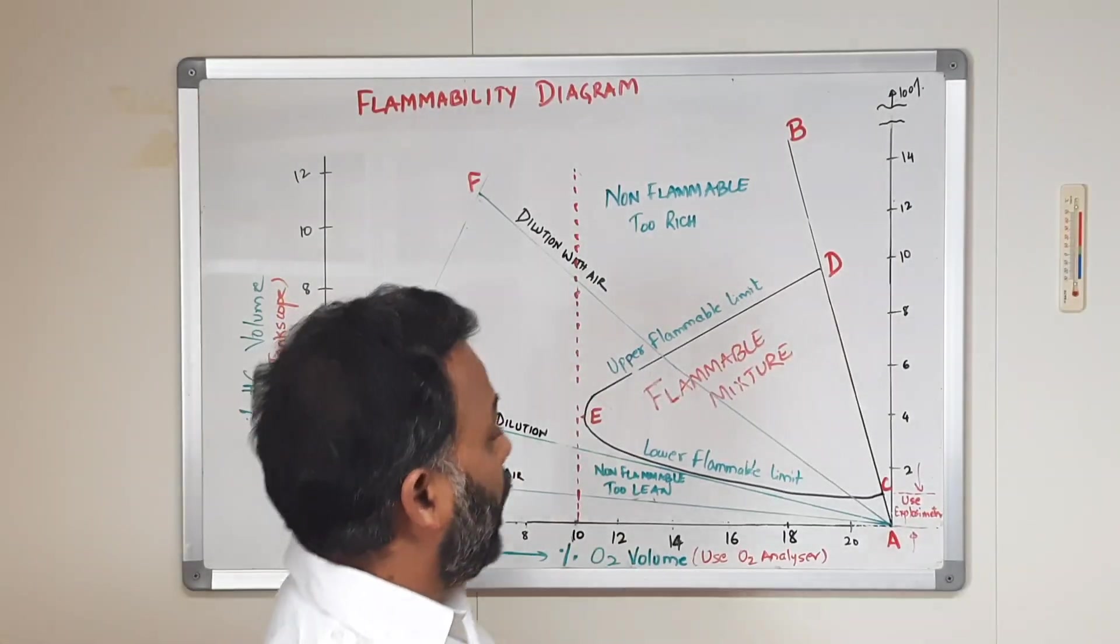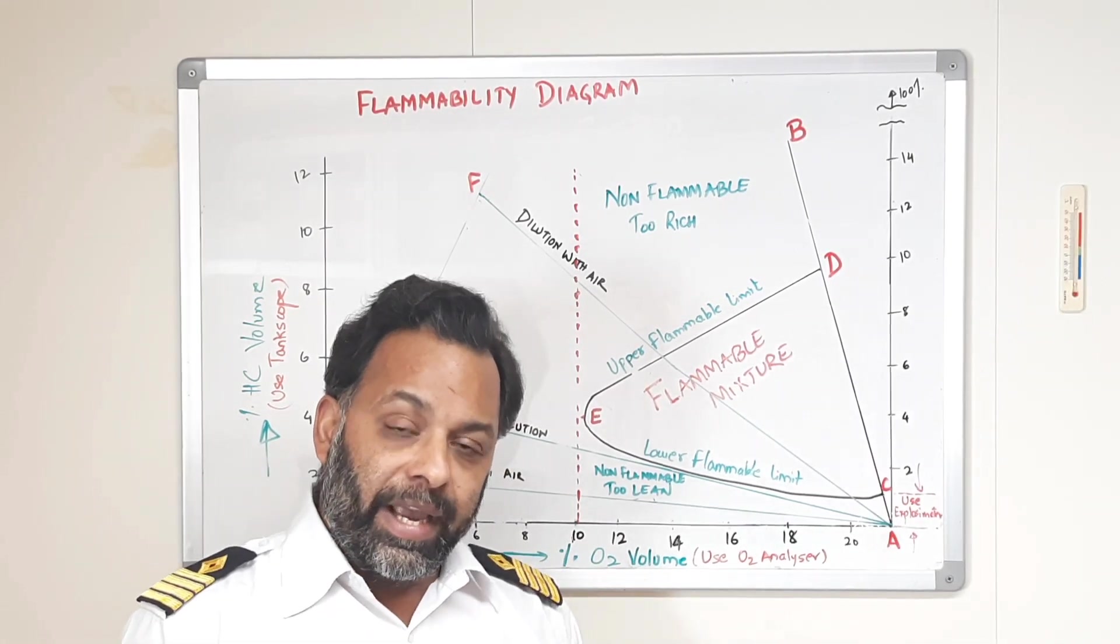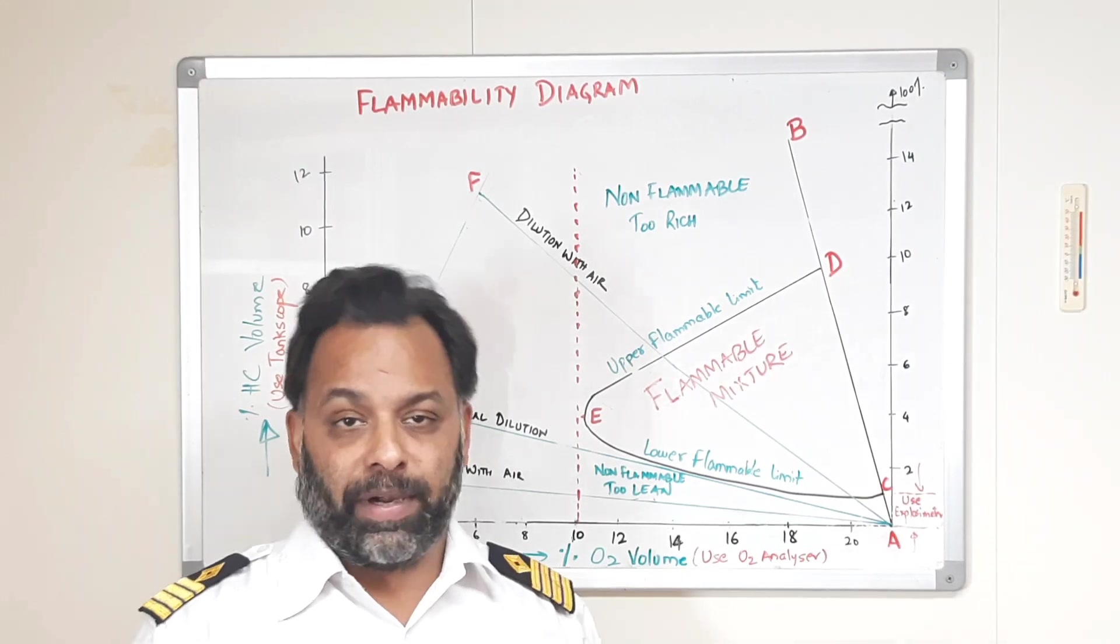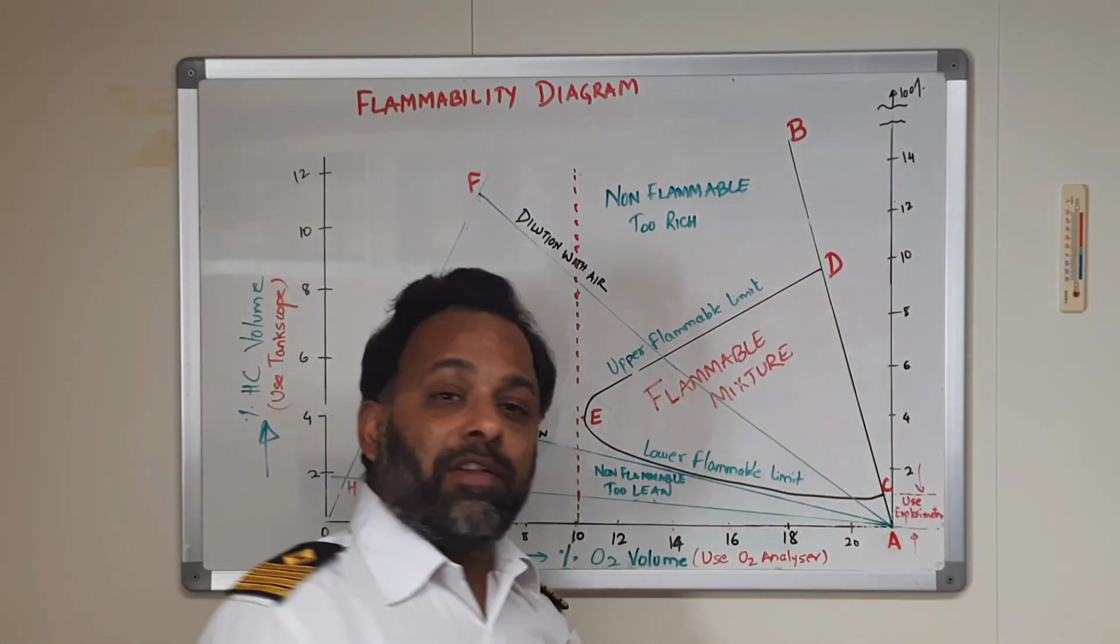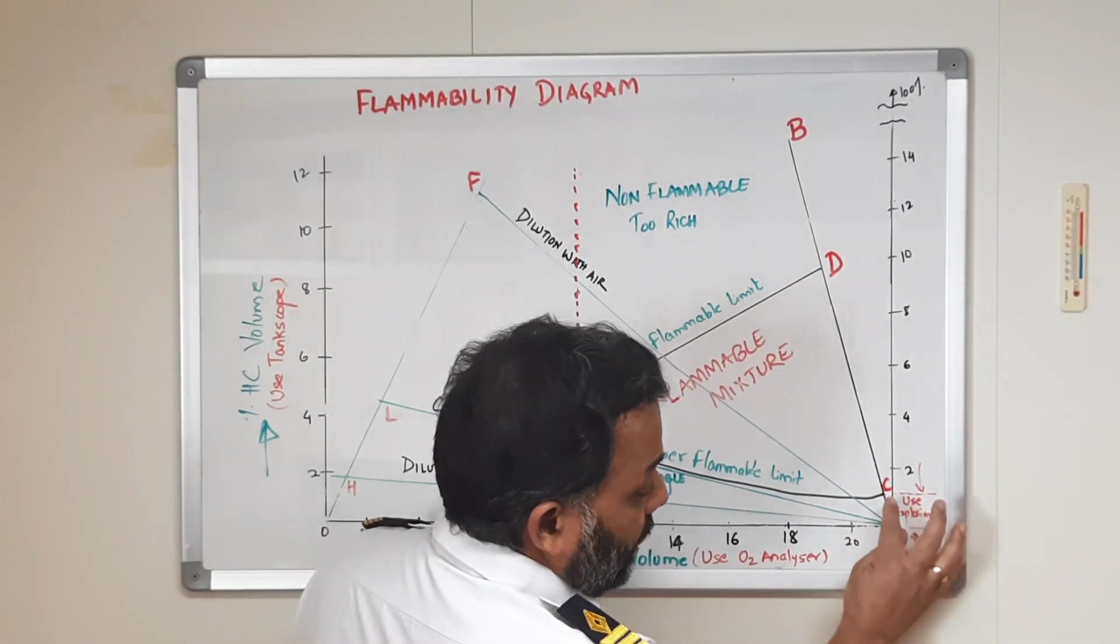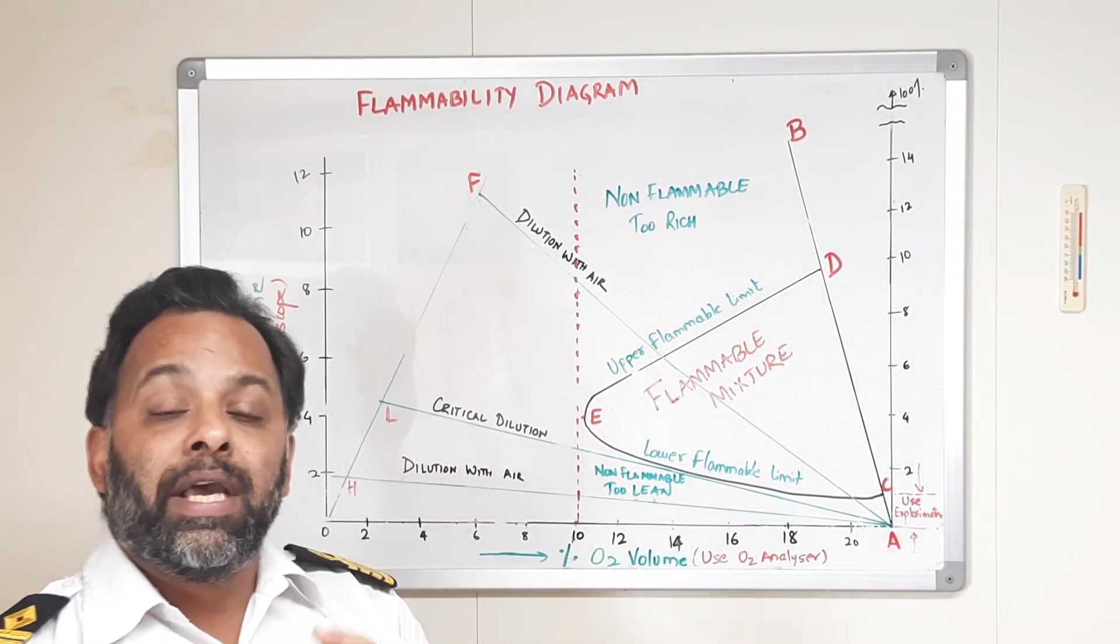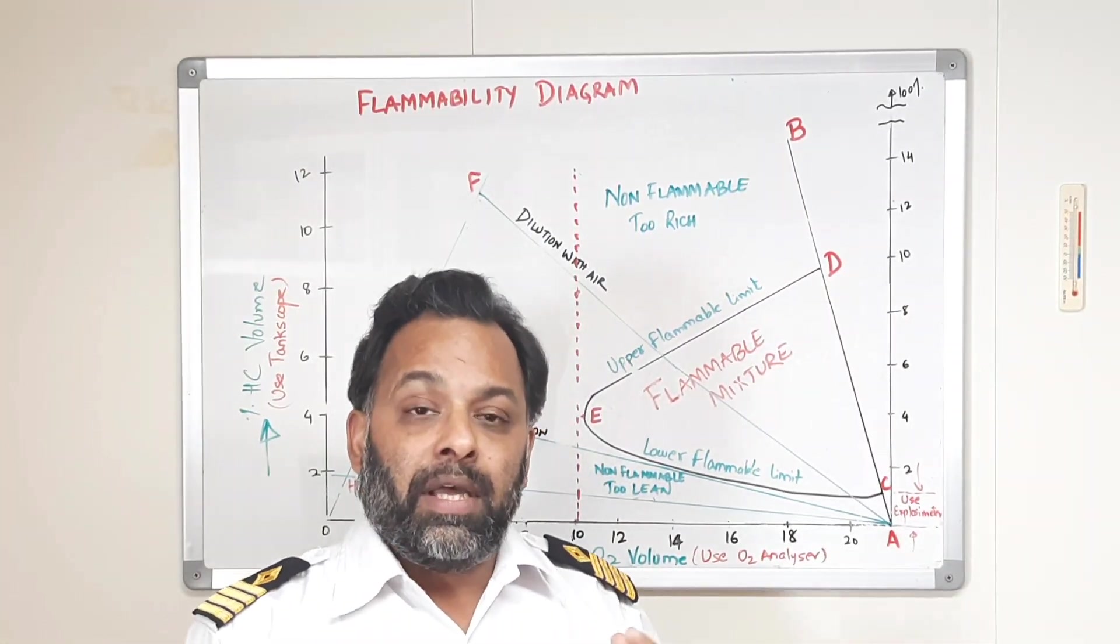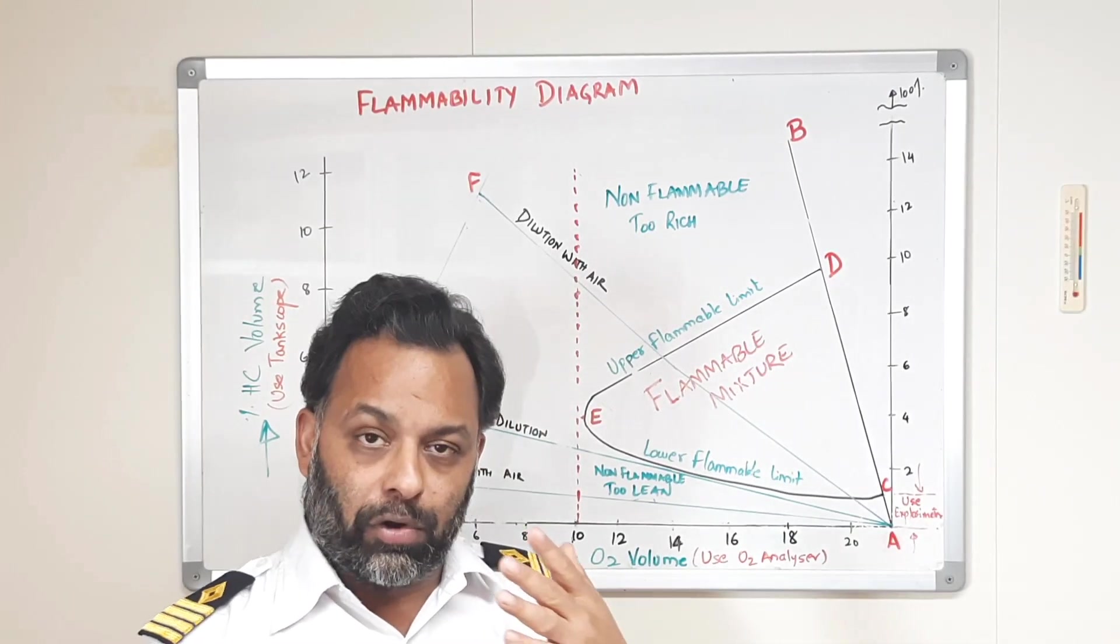For crude oil, upper flammable limit and lower flammable limit is 10% and 1% by volume of hydrocarbon respectively. Now what this means is any mixture of hydrocarbon and oxygen below lower flammable limit, the mixture is too lean to fire. That means the amount of fuel, the amount of hydrocarbon in that mixture is too less and it cannot fire.